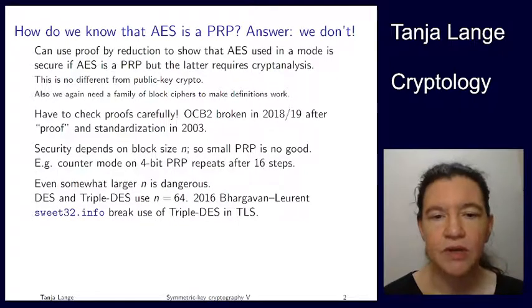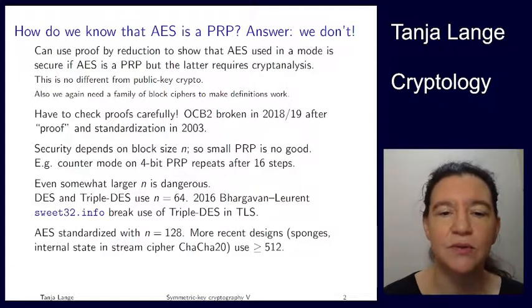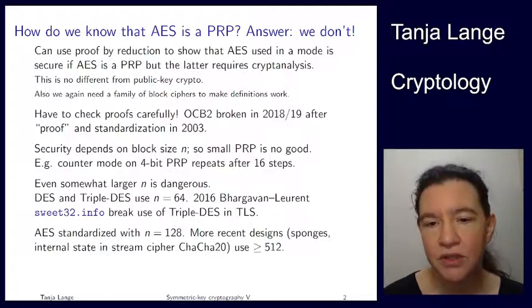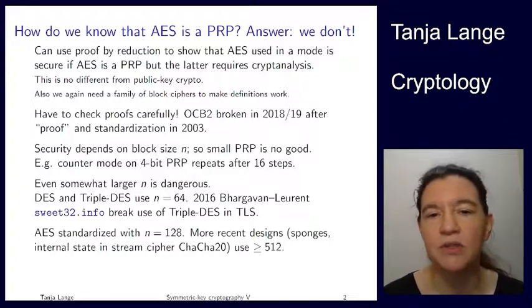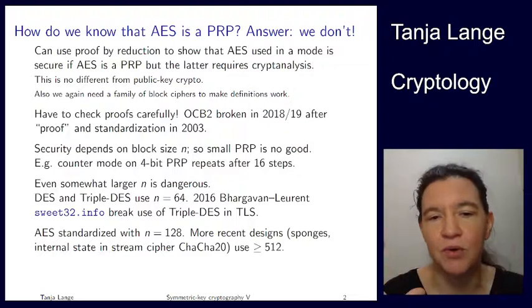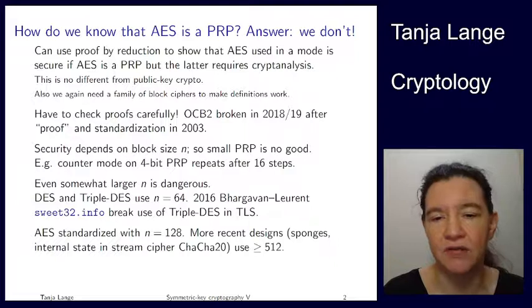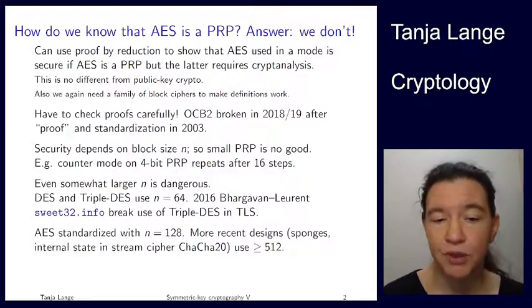Now when you're looking at more modern ciphers, so AES, which was standardized in 2001, uses a block size of 128. In more recent designs, we have seen sponges in context of hash functions. And stream ciphers like ChaCha20. Many of those work with internal states, which is similar to what the block cipher weakness comes from. And these states are much, much larger. ChaCha20 is using 512. And the Keccak or SHA-3 sponge was over a thousand. So much bigger ones.